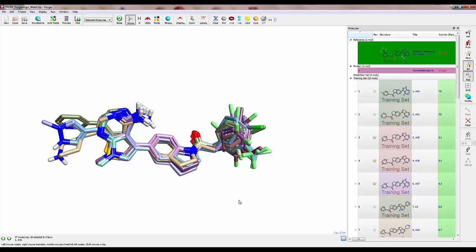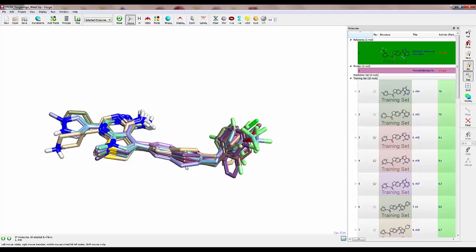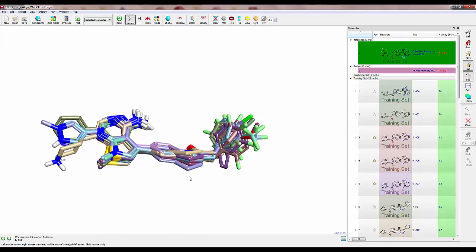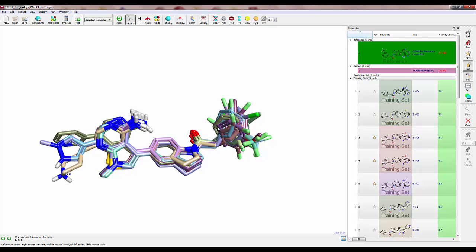If we look at the indoline core, we see that there is some variation in the positions of the atoms of the core and quite a bit of variation in the peripheral groups. Let's realign using the maximum common substructure.